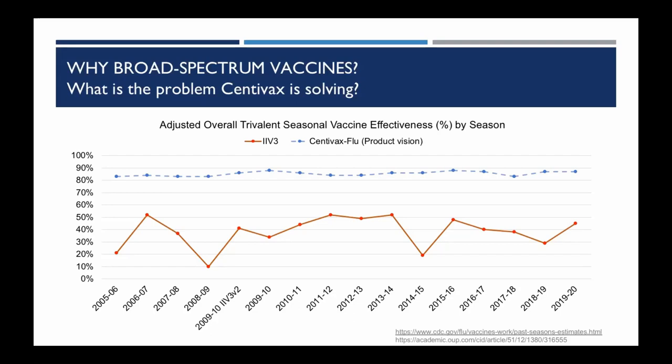The variation in seasonal vaccine efficacy is a function of how well people can predict what the virus will look like eight to twelve months in advance when they start manufacturing. Just like with coronavirus, you have to estimate and build towards the virus as it is now — and by the time manufacturing is done, the virus could have changed. What we intend to do is achieve that dotted blue line: something that is much more efficacious and more even across seasons — a broad-spectrum or universal vaccine characteristic that just works the same every year.